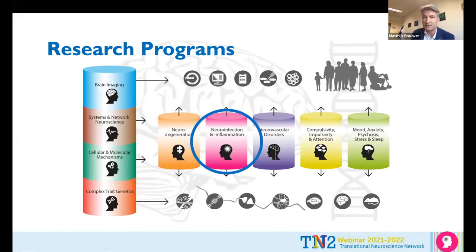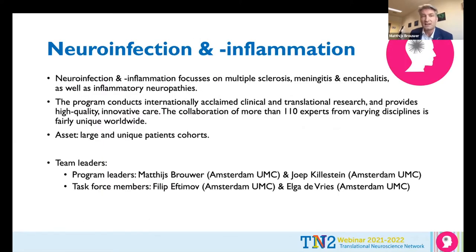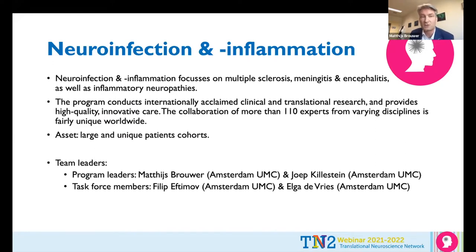We're one of nine research programs in Amsterdam Neuroscience that focuses on a spectrum of diseases, including among others multiple sclerosis, meningitis, encephalitis, and inflammatory neuropathies. We have about 110 experts in these programs with internationally acclaimed clinical and translational research and also provide high quality innovative care to patients. One of our biggest assets are large and unique patient cohorts. I'm one of the team leaders together with Joachim Kylestein, and furthermore Filip Eftimov and Elger de Vries are team members.